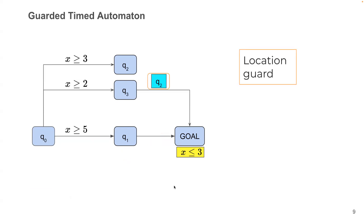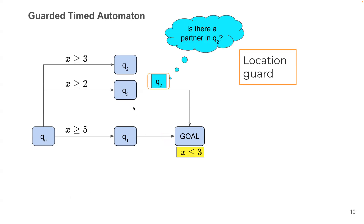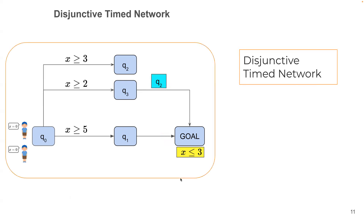Let us consider an extension called a guarded timed automaton (GTA), where transitions can have location guards. The meaning of a location guard is that if a process is at q3 and wants to take the transition to 'goal', it must have another process in q2 waiting for it. A network with a GTA is called a disjunctive timed network.